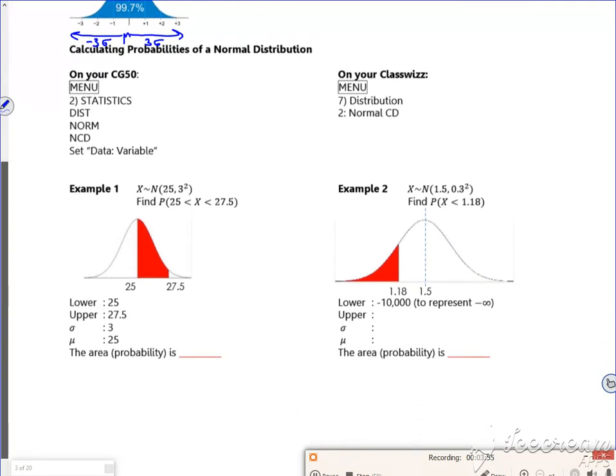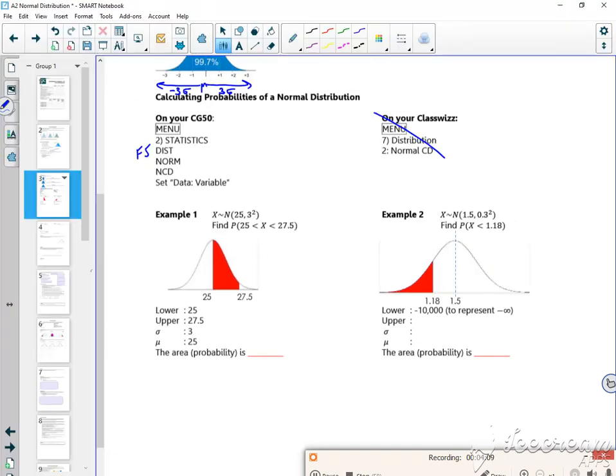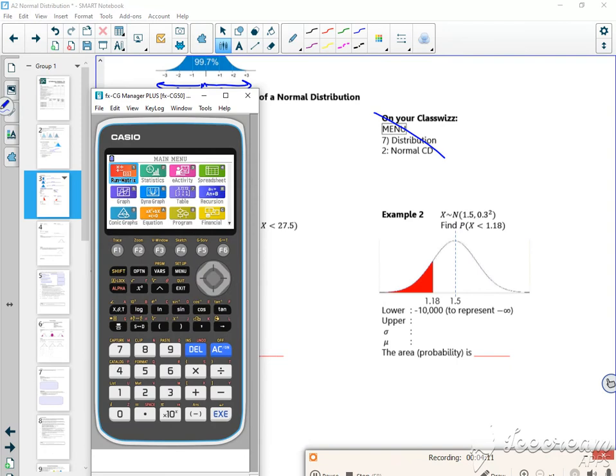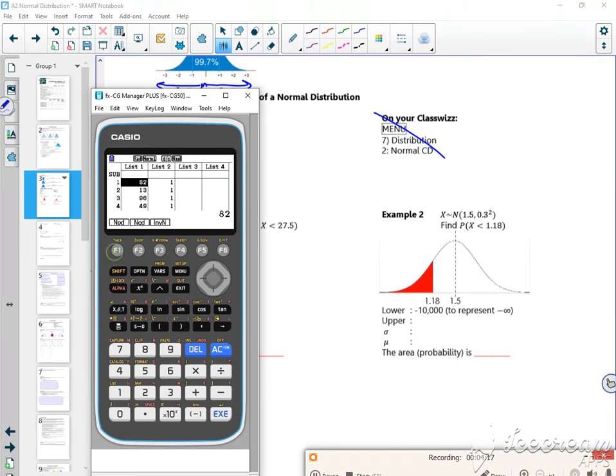There, so the same idea, the same idea as when we did binomial. If I do Stats F5 for distribution, I've now got normal. Let's have a look, see if it's there. So if I do Menu 2, F5 for distribution, I've got F1 for normal and I've got BPD, BCD, and inverse as well.